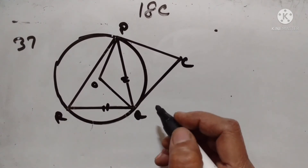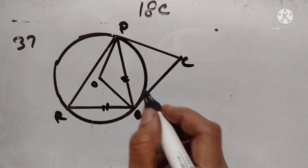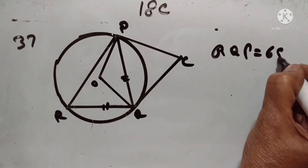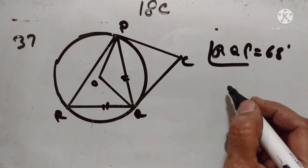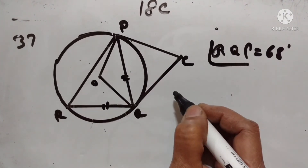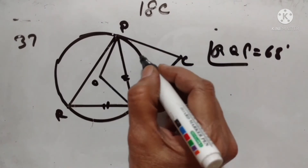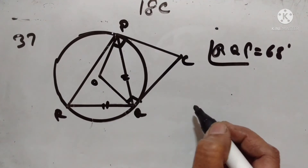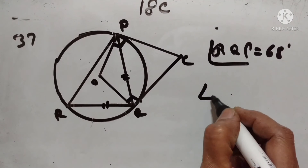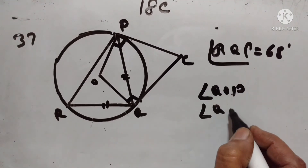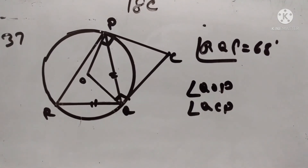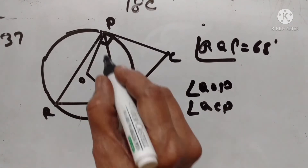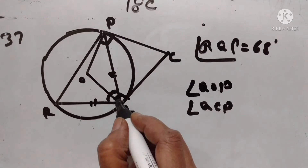37th problem. In this figure, PQ equals QR and angle RQP equals 68 degrees. PC and CQ are tangents to the circle with center O. Since they are tangents, angle CPO equals 90 degrees and angle CQO equals 90 degrees. We need to calculate the values of angle QOP and angle QCP. Angle RQP, this angle, is equal to 68 degrees.